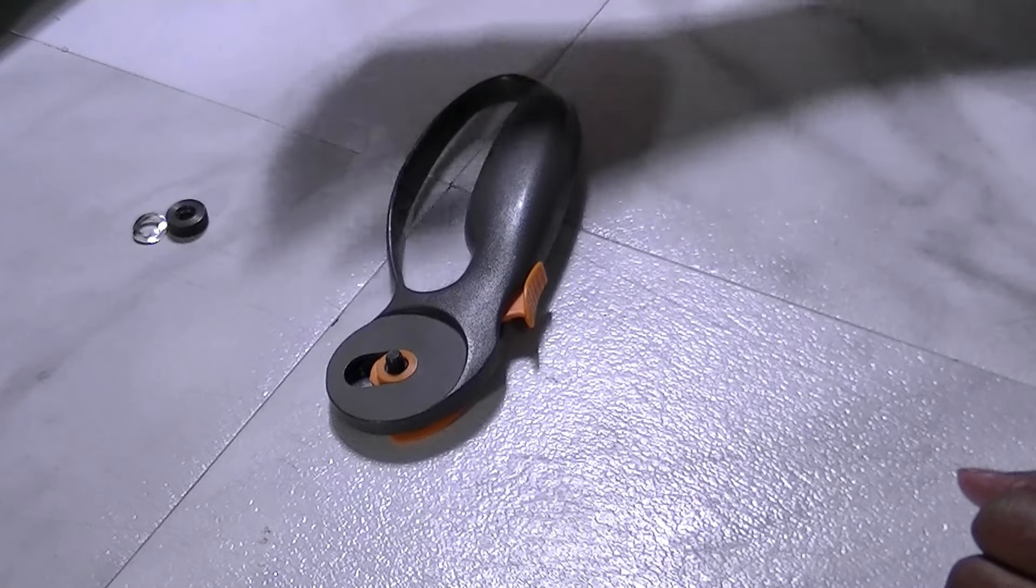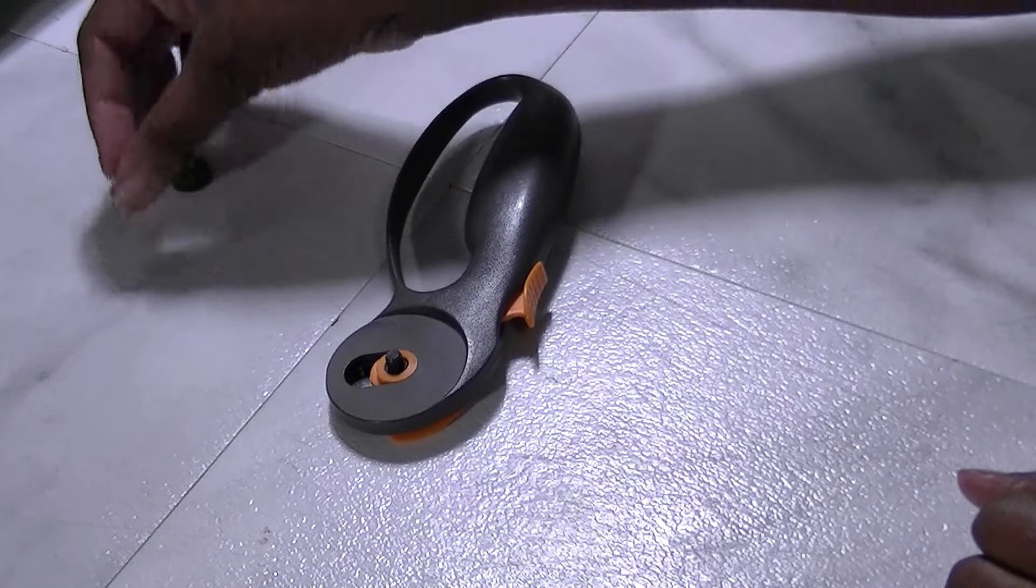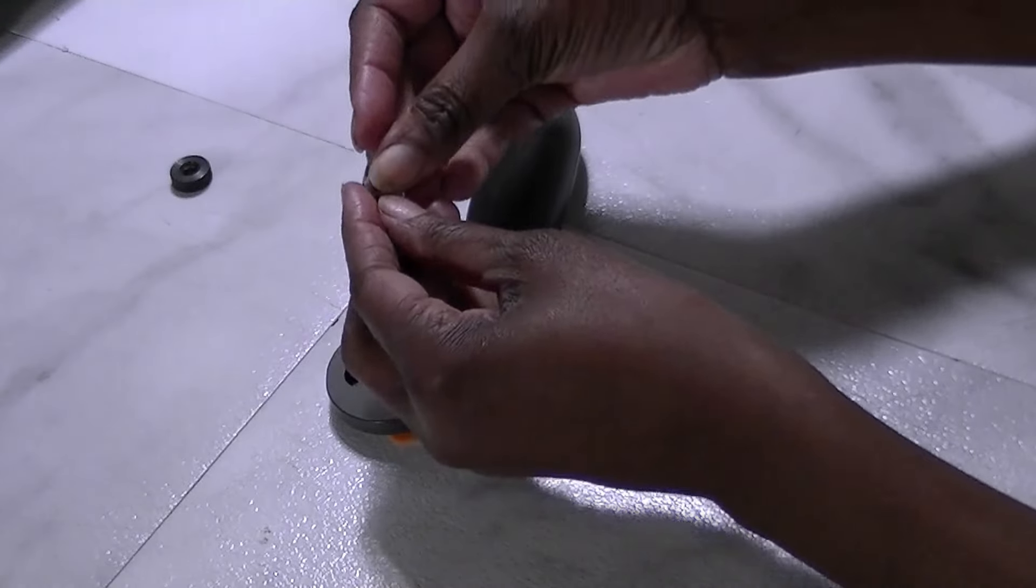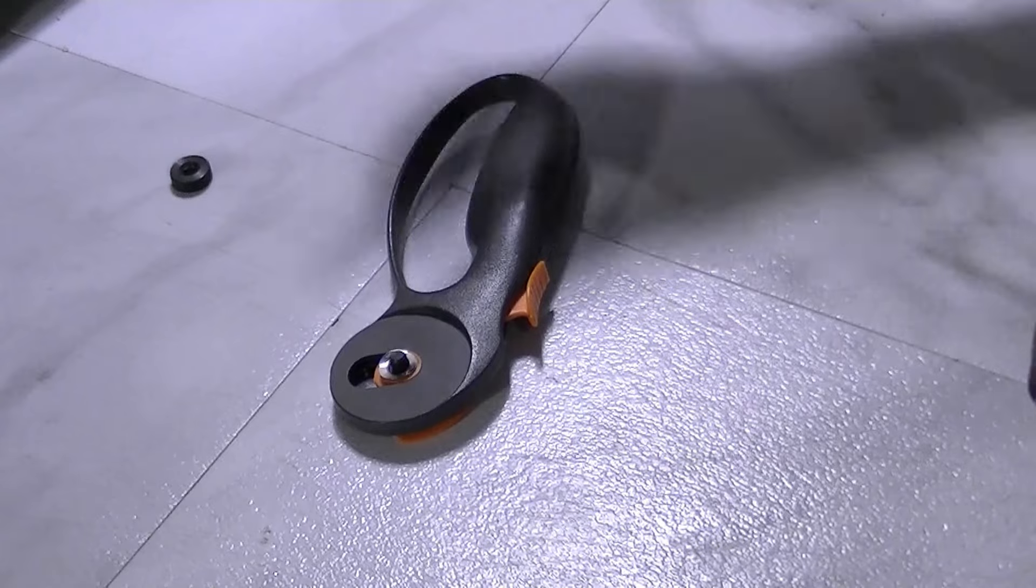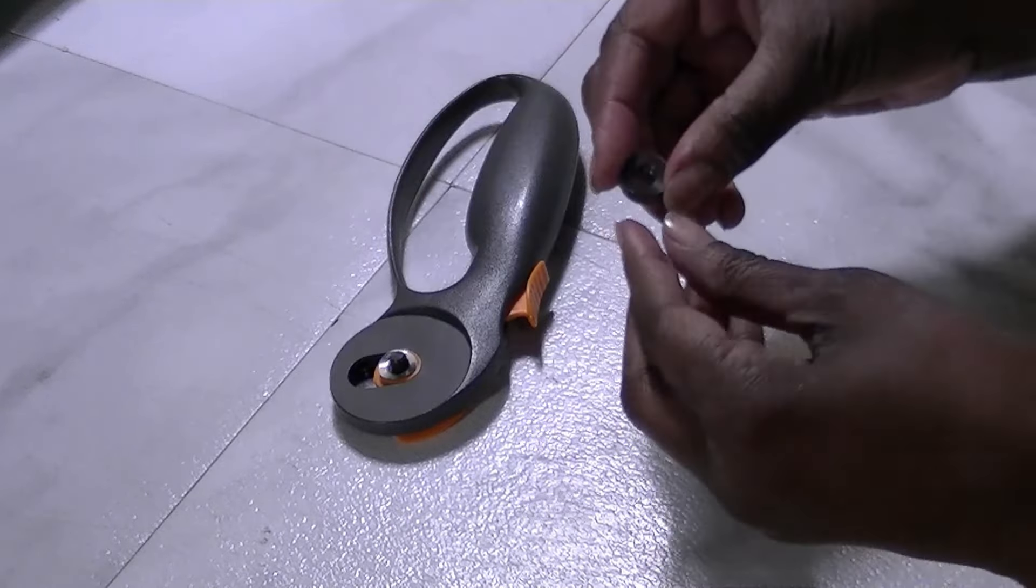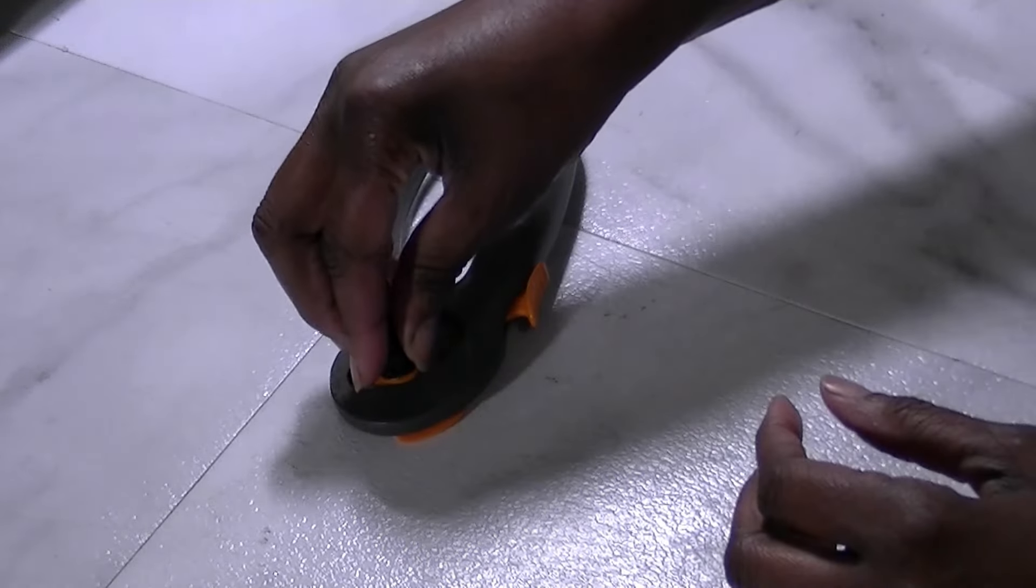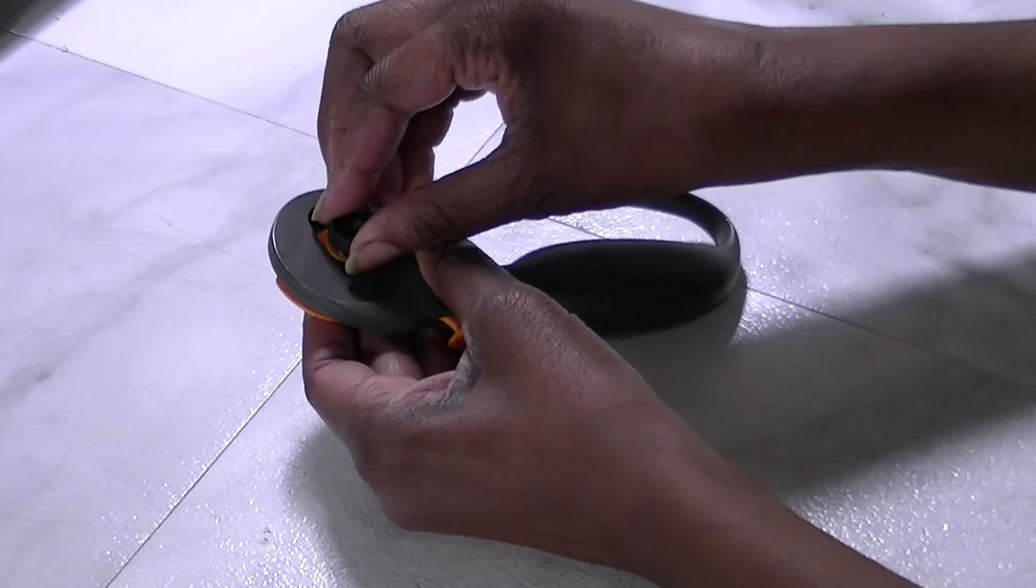Then you're going to take your washer—matter of fact, there's two of them—turn them back over and put them on top. Now you have your screw. You're going to take the screw and place it on.